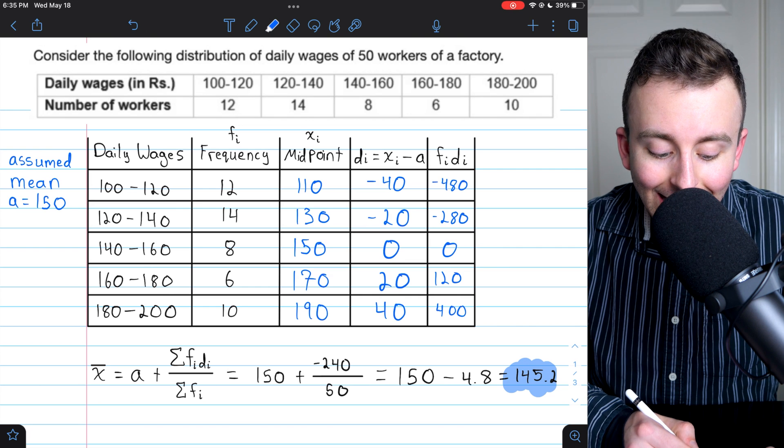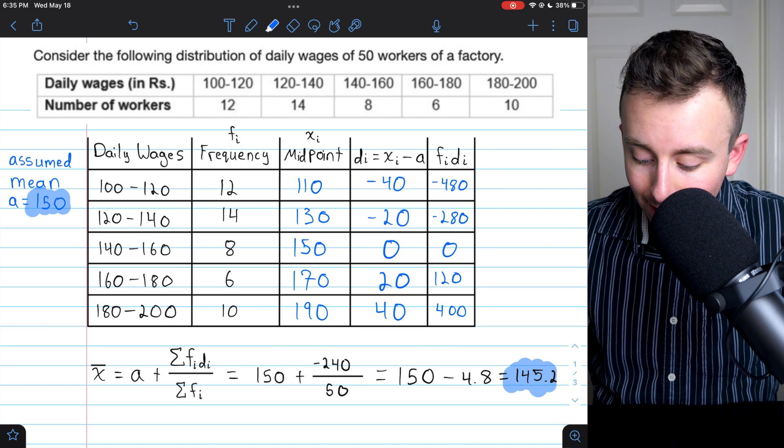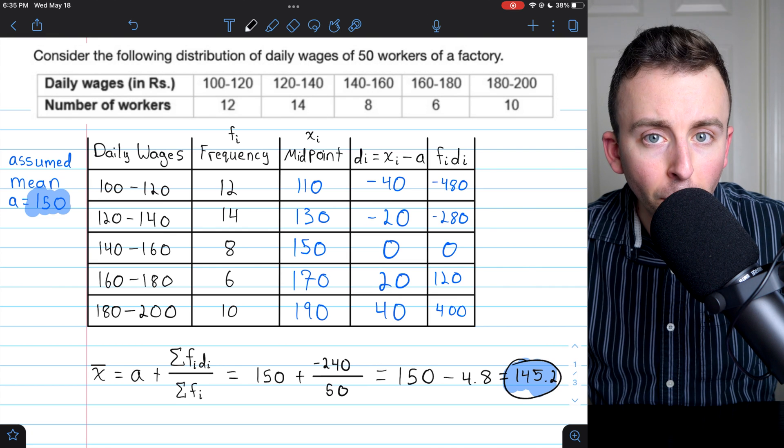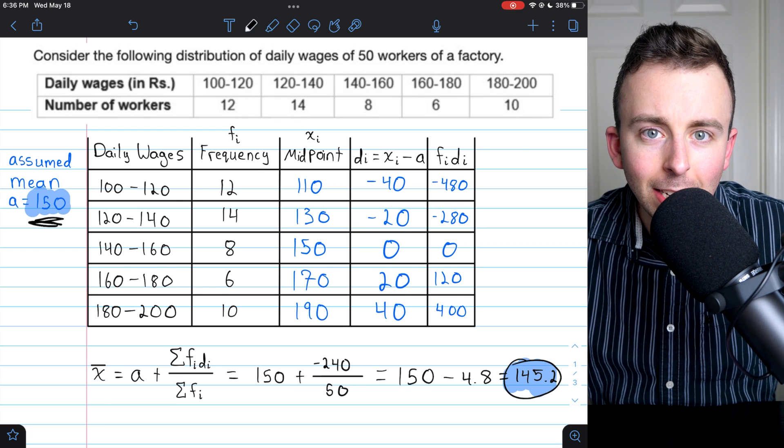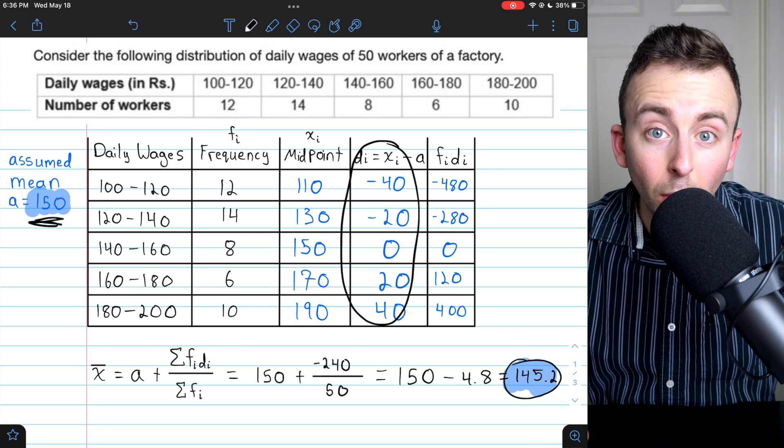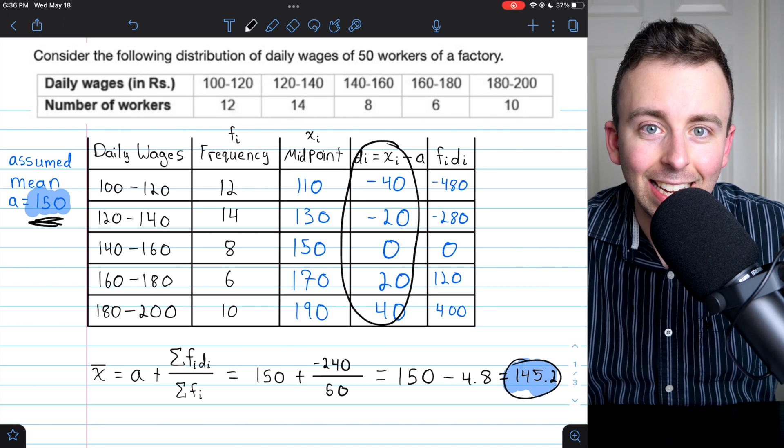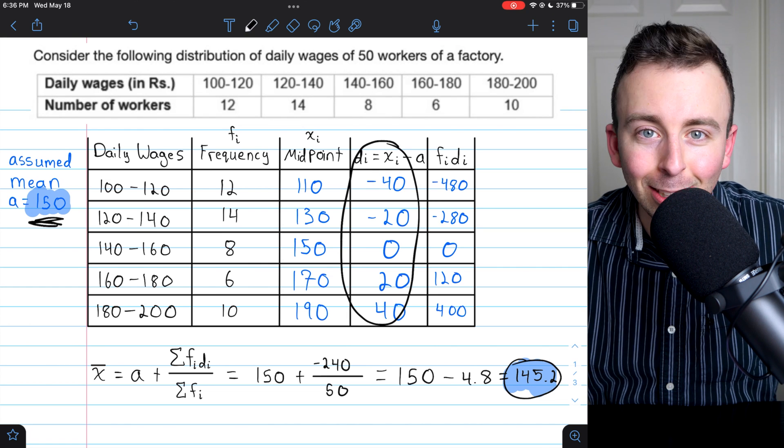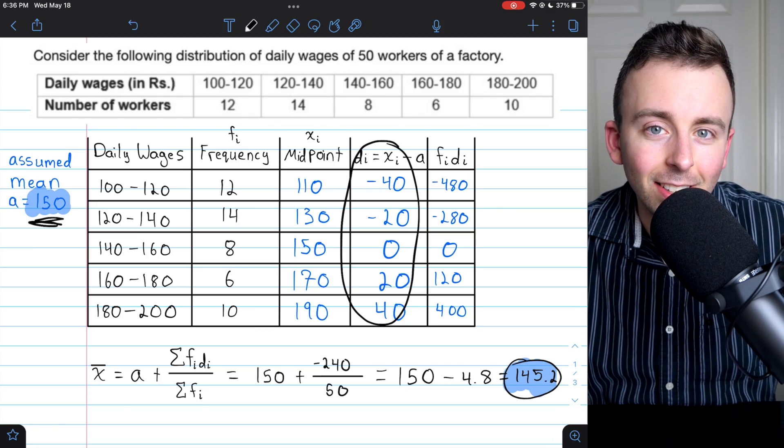I encourage you to try picking a different assumed mean and going through this process again to see if you get the same number, 145.2. You should. And if you do, you'll know that you performed all of the steps correctly. If we had chosen a really inaccurate assumed mean, like a thousand, for example, then these di differences would all be bigger, making the whole process more difficult to do by hand or to calculate in our heads. So that's why you want to try to pick a good mean. But it's always going to work out as long as you do the calculations correctly. Hope this was helpful. Let me know in the comments if you have any questions. And I'll see you next time.